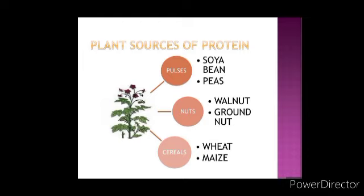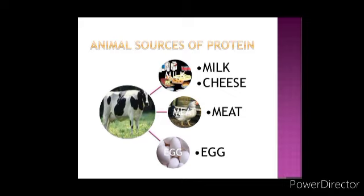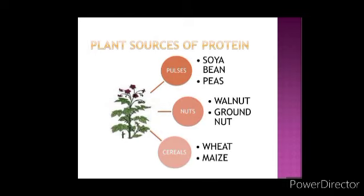Next, let us look at the sources of protein. There are two sources of protein - we get them from plant sources and also from animal sources. Meat, fish, and eggs are some animal sources of proteins. Beans, peas, walnut, groundnut, wheat, and maize are some plant sources of proteins.